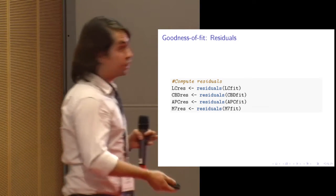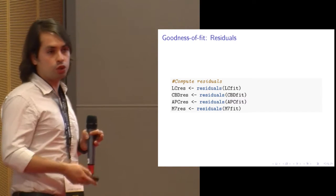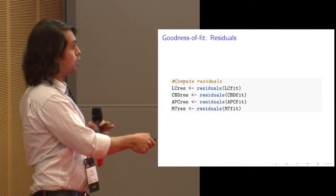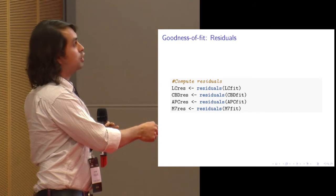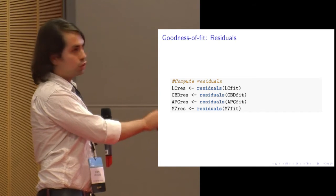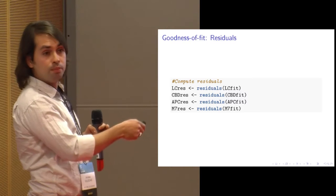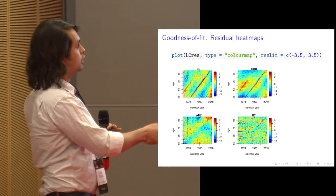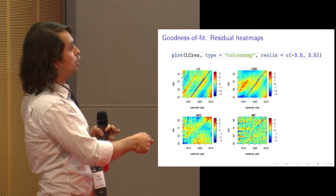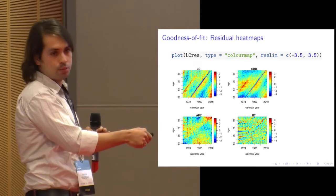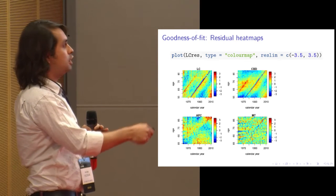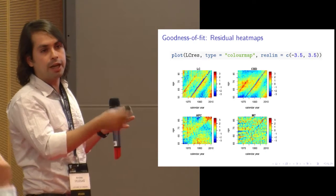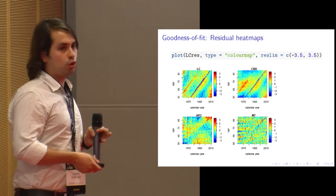An important step when using stochastic mortality models is analyzing goodness of fit by examining residuals. You estimate residuals using the residuals function applied to the fitted model, then plot them as widely used heat maps. For example, the Lee-Carter model for the UK shows diagonal patterns indicating poor fit. The CVD model has similar issues, the APC shows some concentration, while the M7 model achieves a quite good fit to the data.